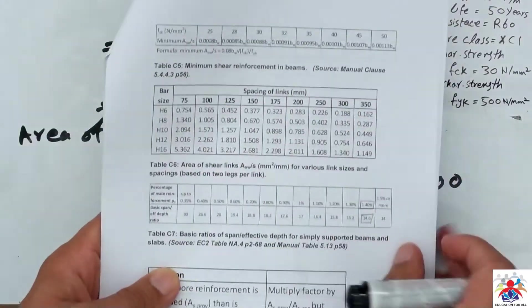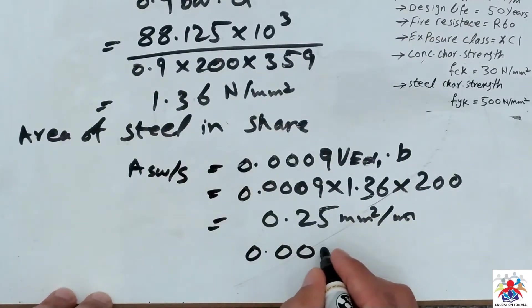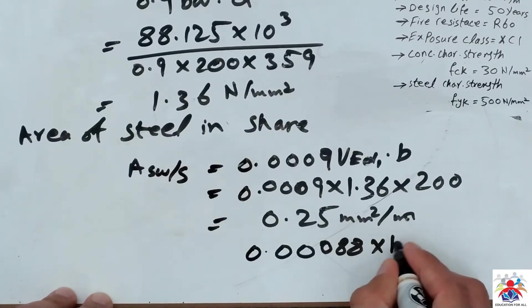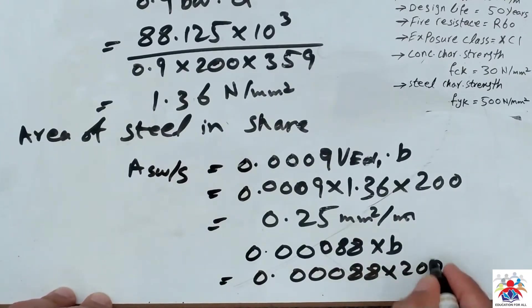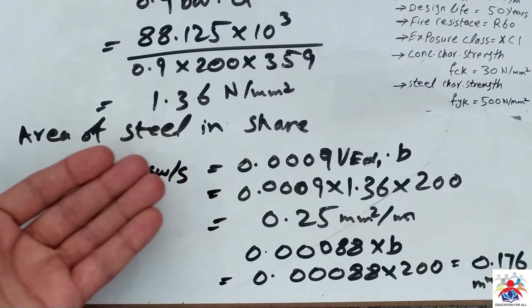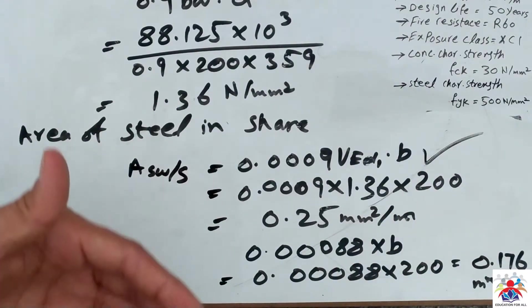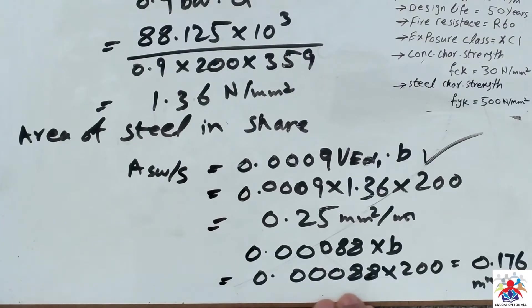For fck = 30 N/mm², the standard formula from the table gives 0.00088 multiplied by b. So: 0.00088 multiplied by width 200 gives 0.176 mm² per mm. We compare what we calculated with the Eurocode standard value. Using fck = 30, we get 0.176 mm² per mm, which is the value we must use.